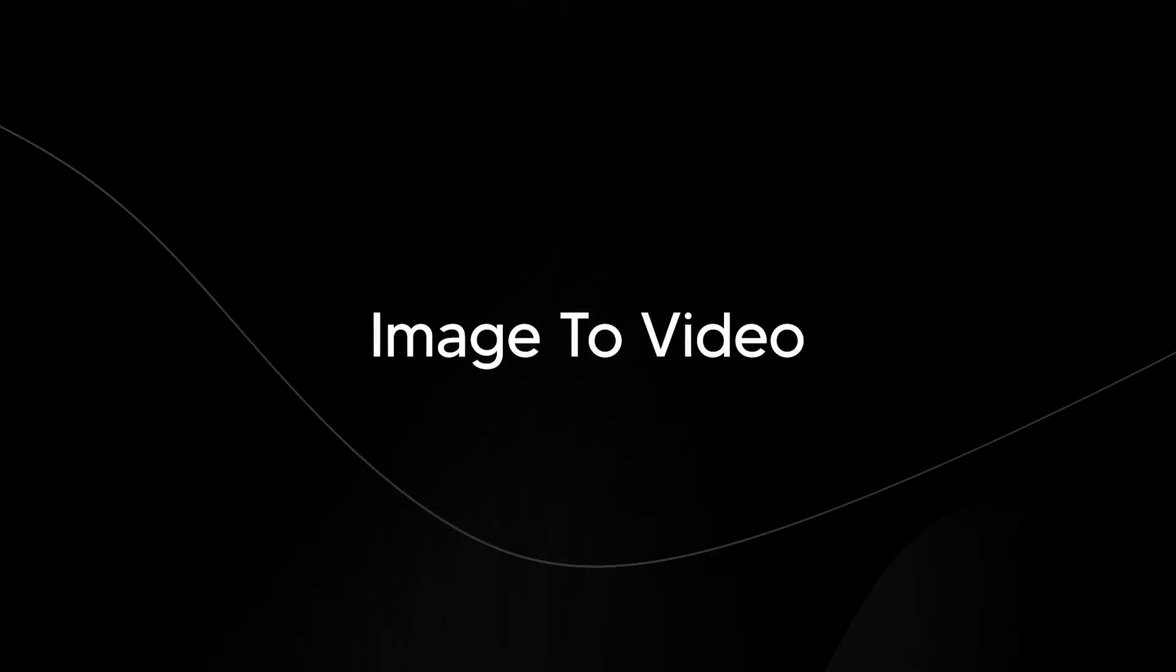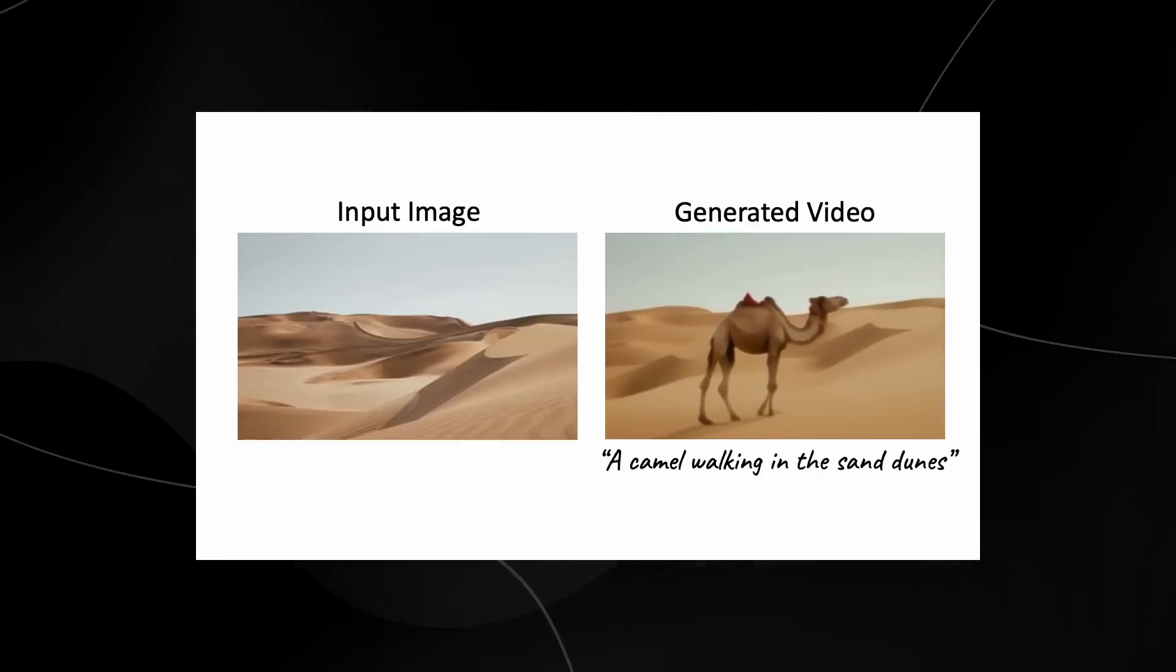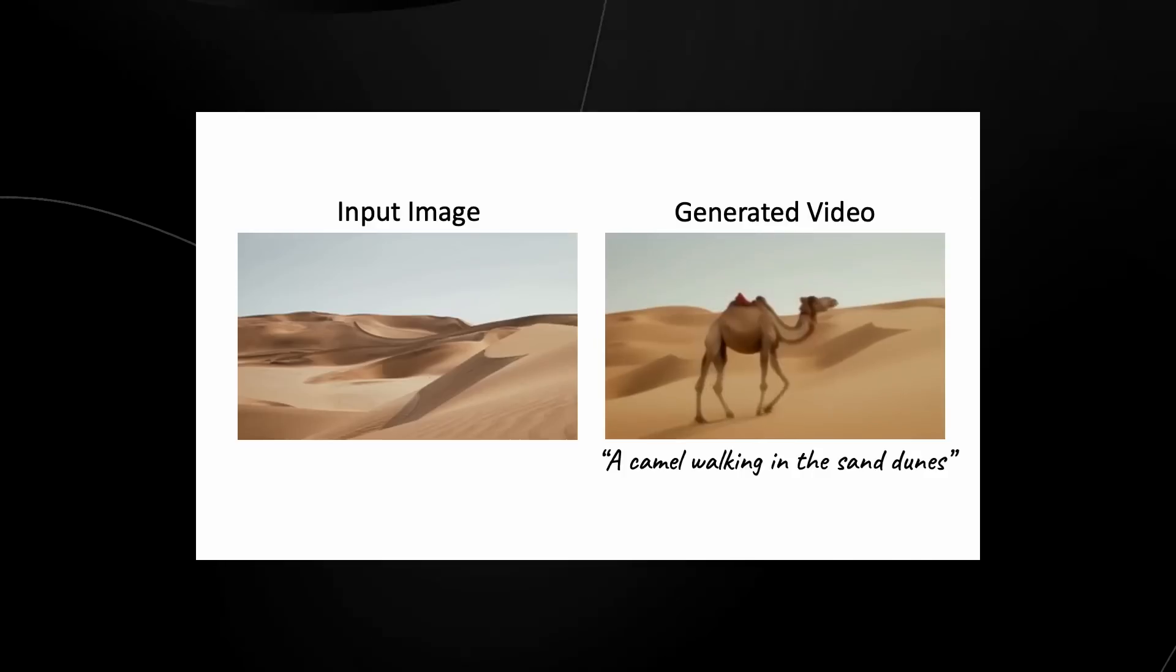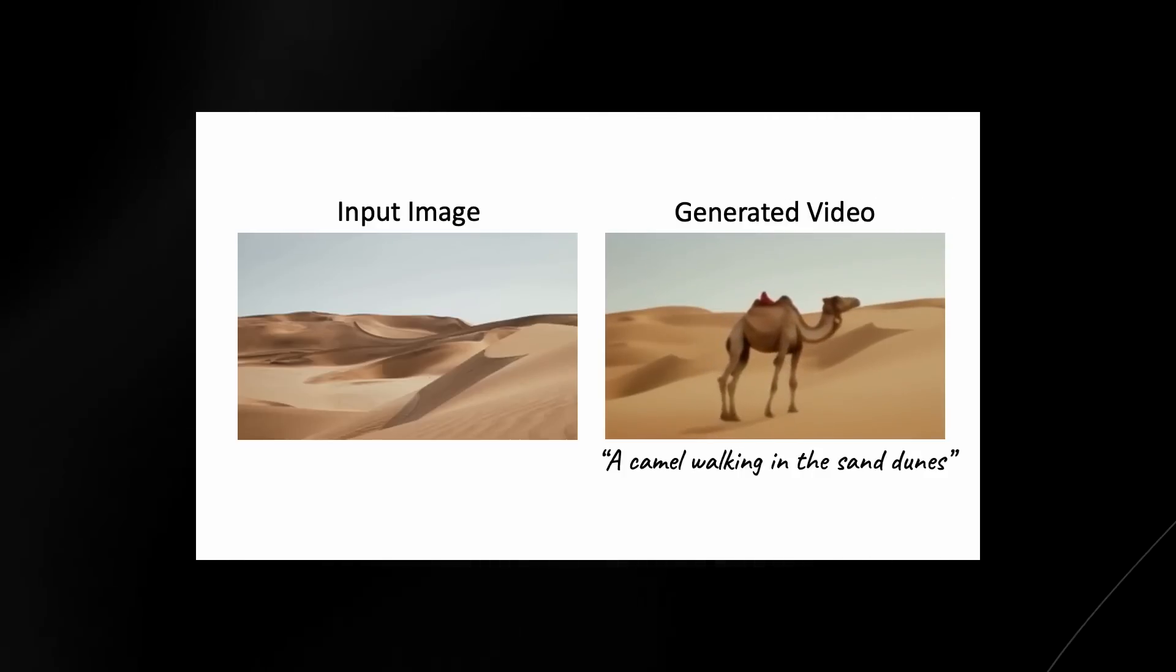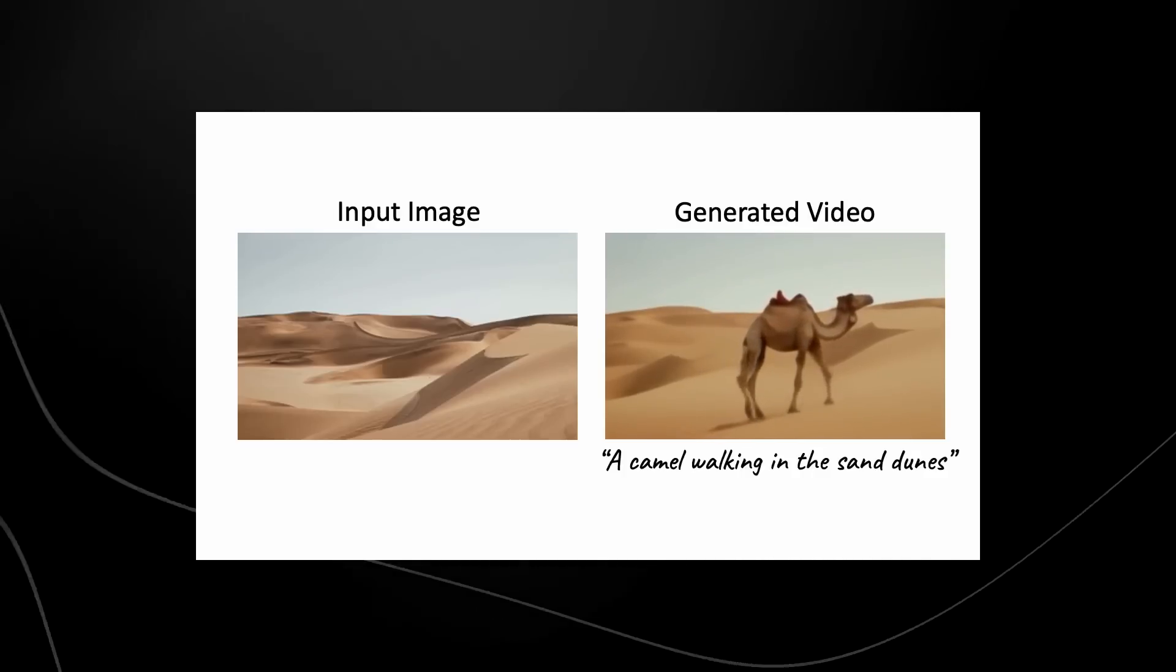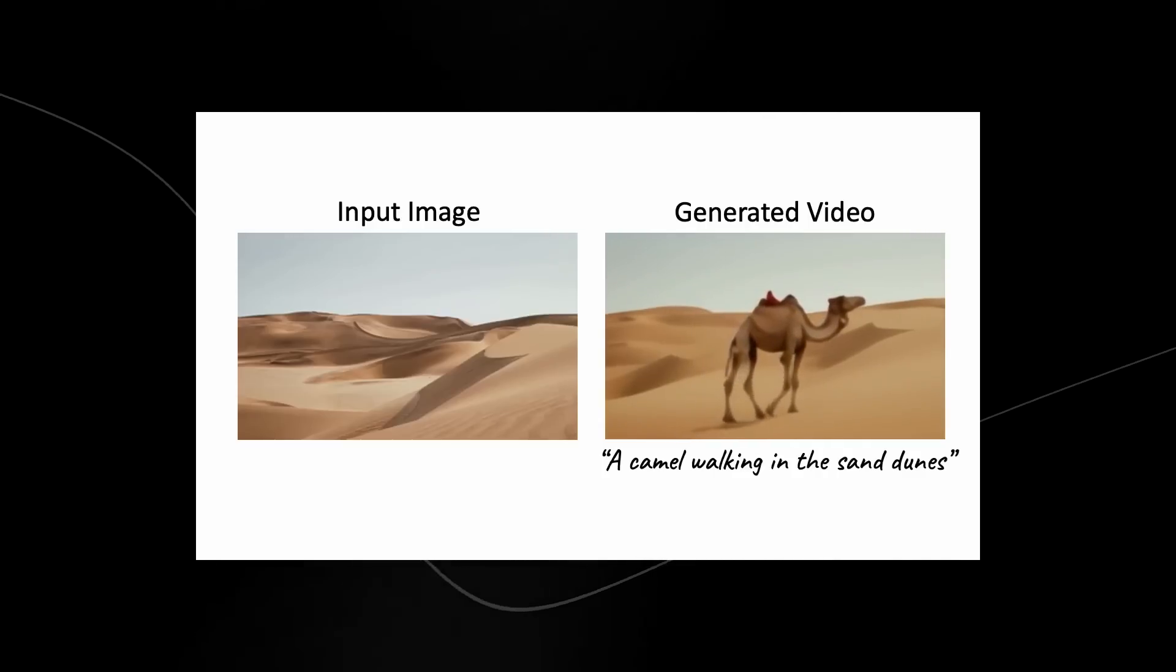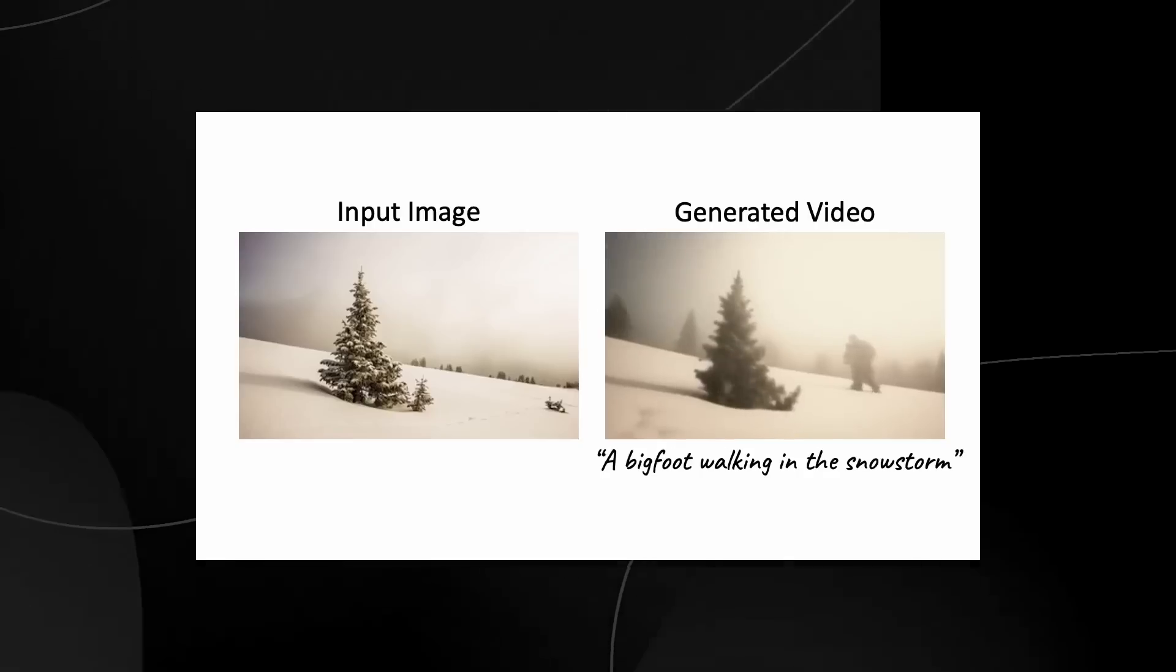We need to take a look at image-to-video because this is the section which is even more crazy. Take a look at this. We can see that the input image is on the left and the generated video is on the right-hand side. And the text prompt is a camel walking in the sand dunes. And honestly, this looks pretty much perfect. I mean, it doesn't look like the highest quality, but it definitely looks great.